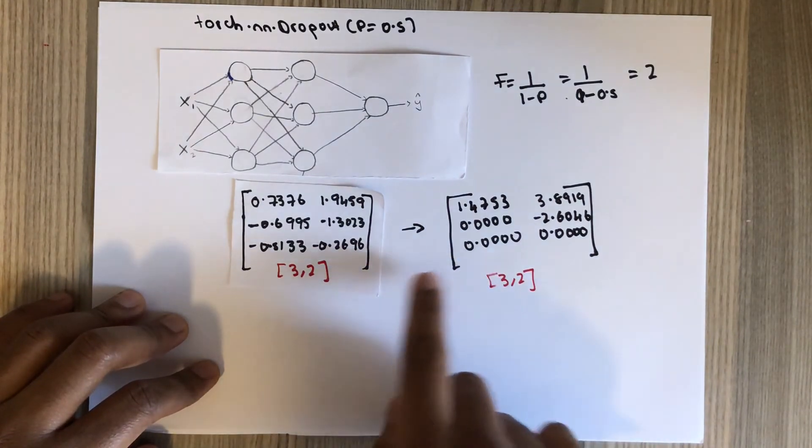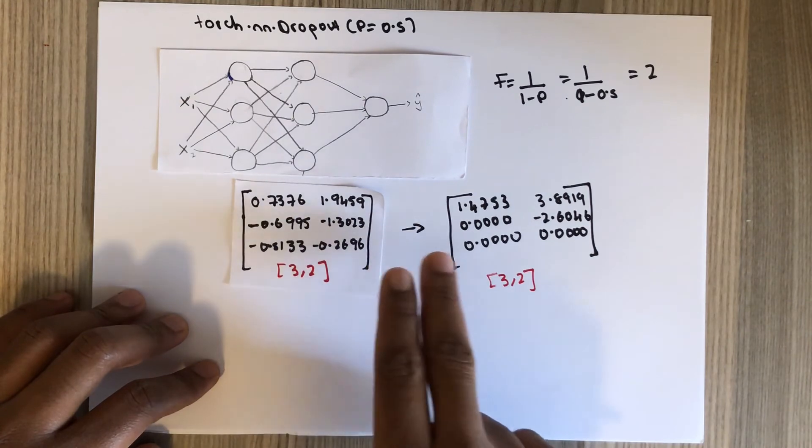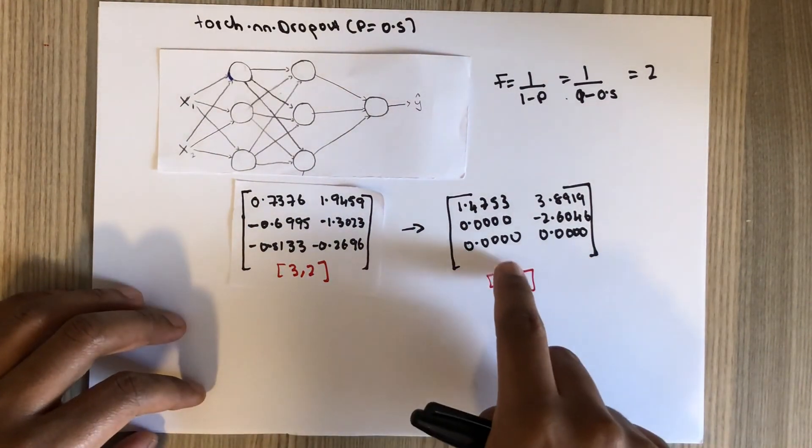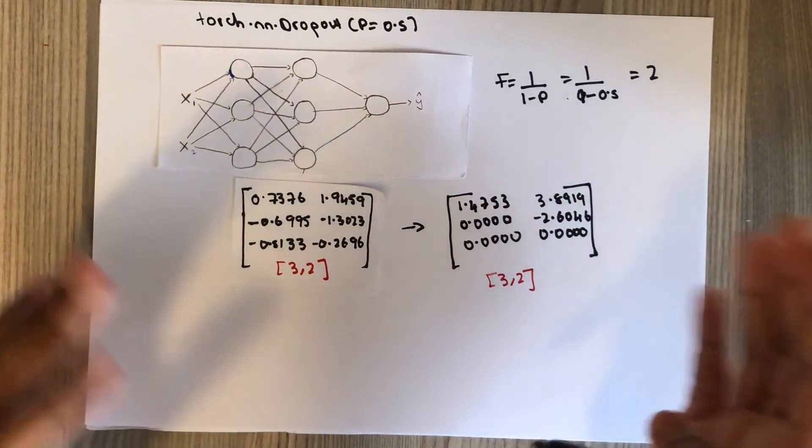And one important thing is that the dropout is only applied during training, not testing. And you use these values both in forward propagation and backward propagation.